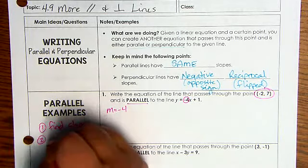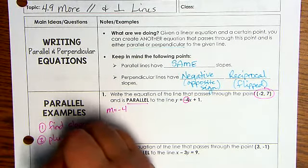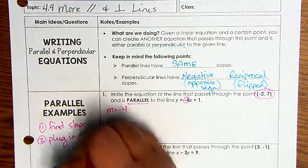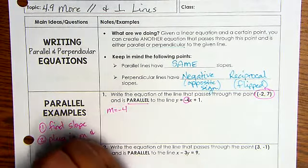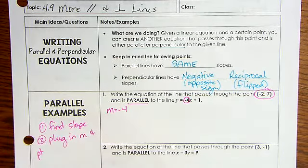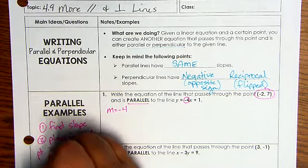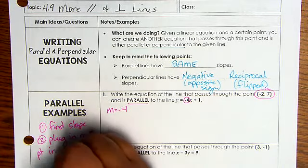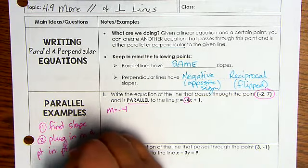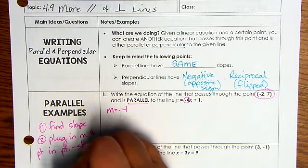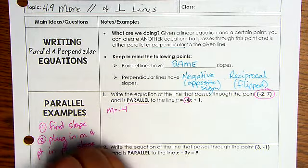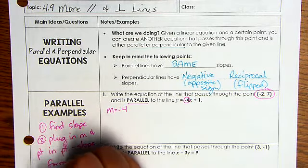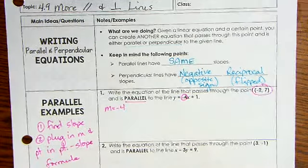Second thing you're going to do is plug in slope and point into point slope formula. That's the easiest one to use because then you can solve simply to y equals mx plus b.